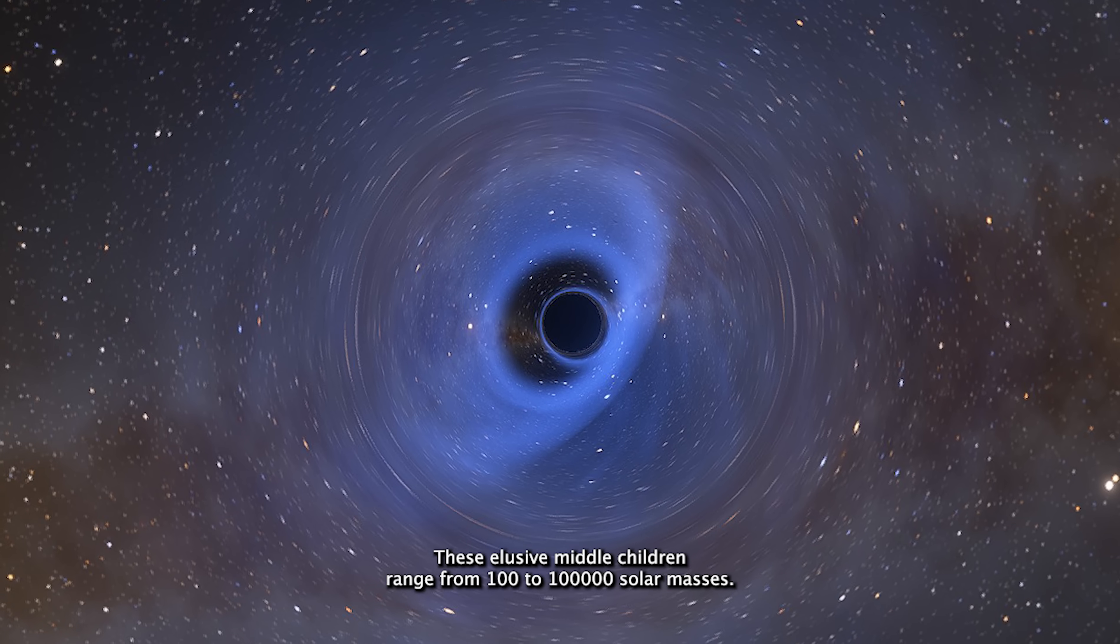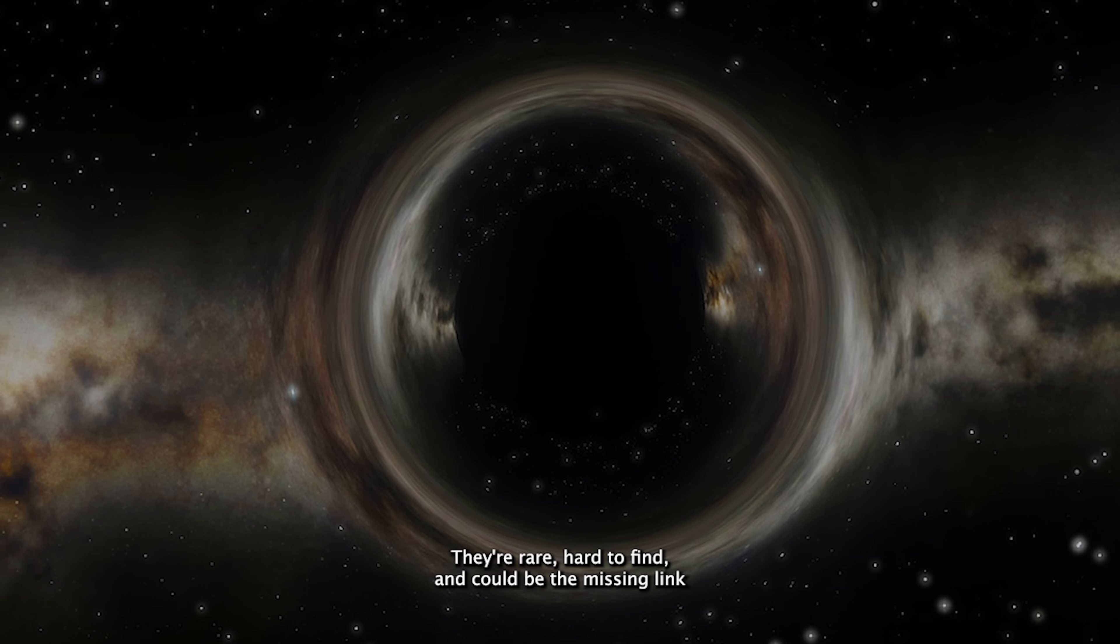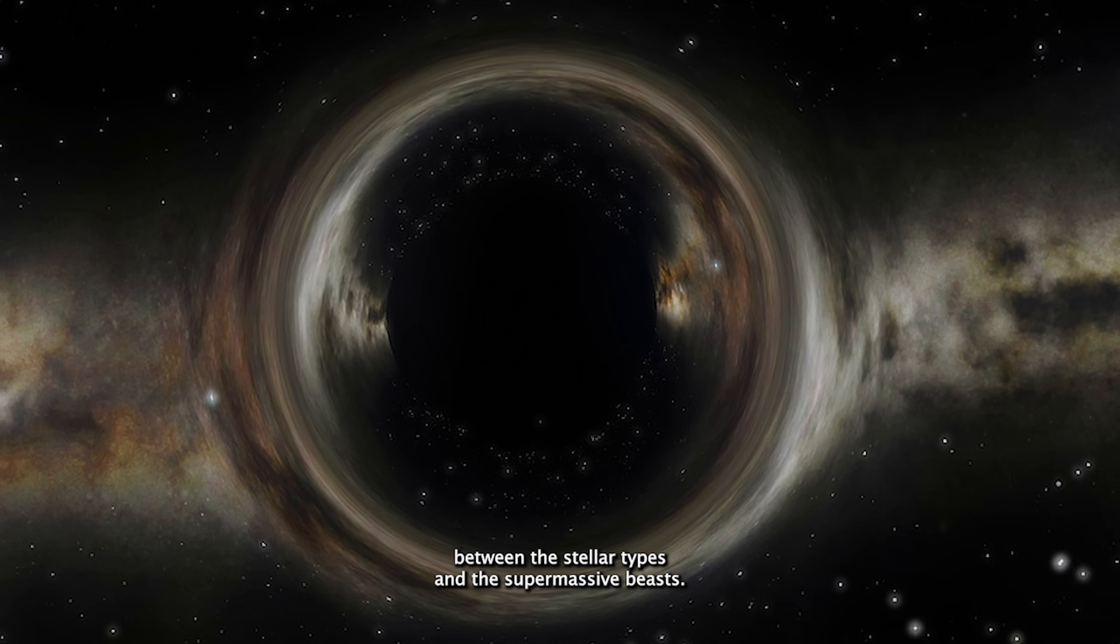Three, intermediate-mass black holes. These elusive middle children range from 100 to 100,000 solar masses. They're rare, hard to find, and could be the missing link between the stellar types and the supermassive beasts.